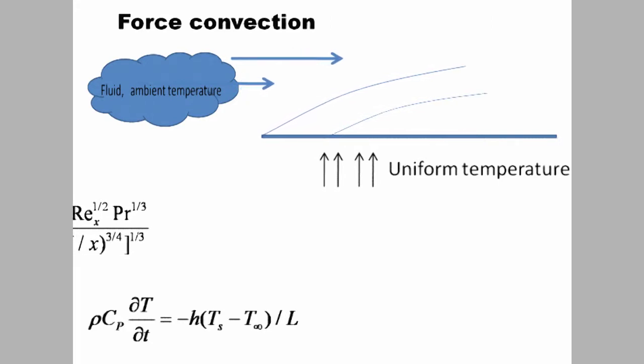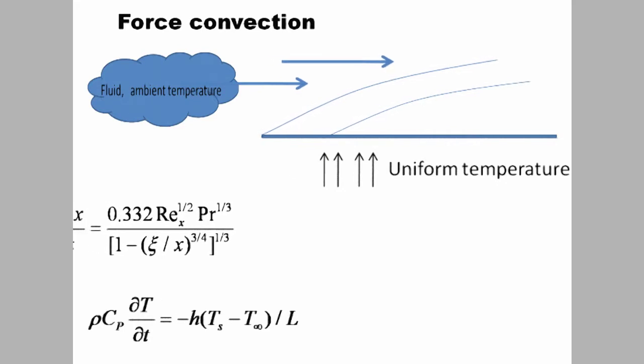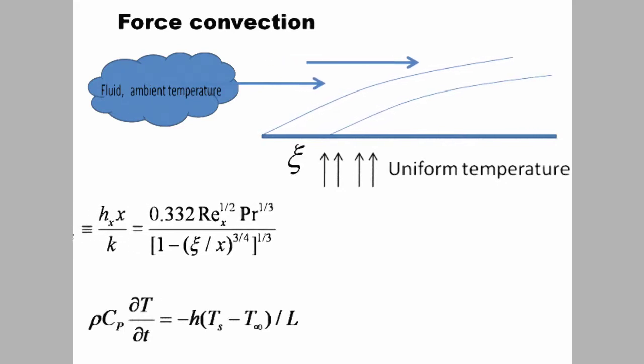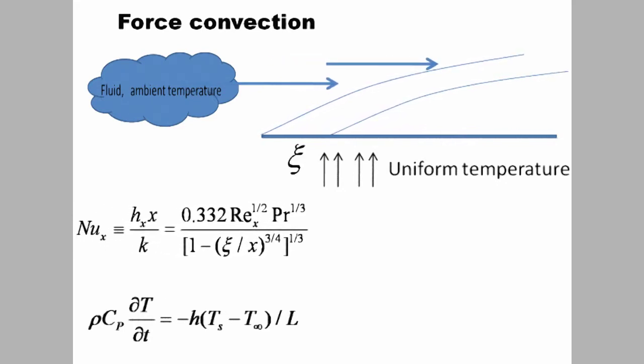If part of the surface is not heated, and the laminar fluid motion is coming from this side, the unheated length will affect the Nusselt number. Because c is the unheated length, it modifies the Nusselt number calculation, as shown.